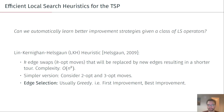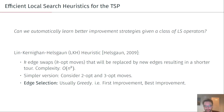The interesting question here is how we can automatically learn better improvement strategies given a class of local search operators. If we look at what is a very efficient local search procedure for the TSP, we arrive at the Lin-Kernighan-Helsgott heuristic, where the idea is that you can select k edges to swap and replace them with edges that lead to shorter tours. You can also consider simpler versions of this procedure, called 2-opt and 3-opt.